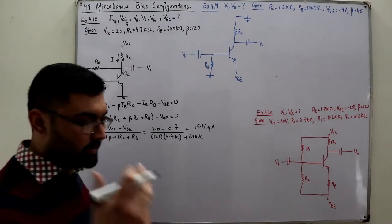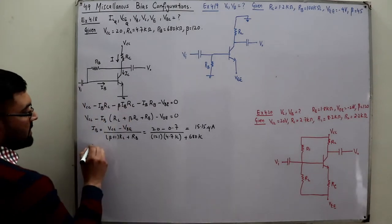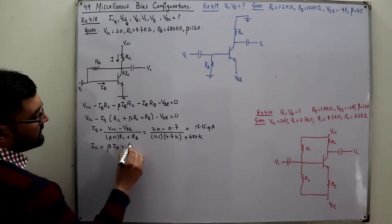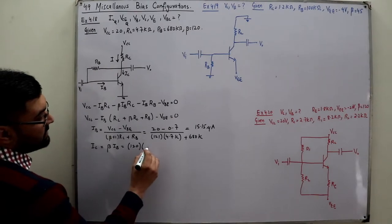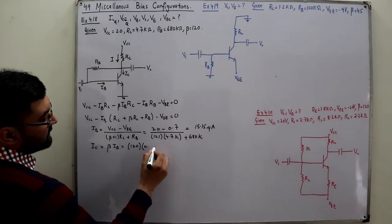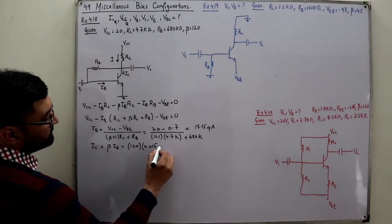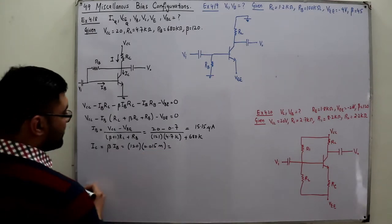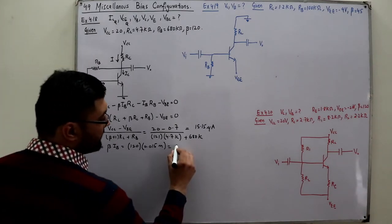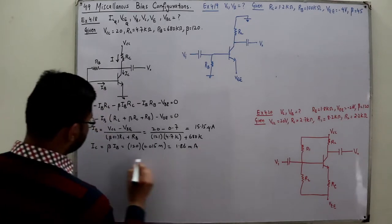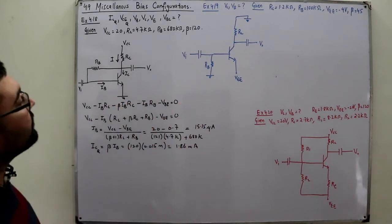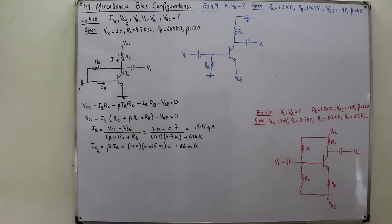Now IC is beta times IB. Beta is 120, IB is 0.015 mA. The value of the collector current IC comes out to be 1.86 milliamperes. This gives us the IC coordinate of the Q-point.